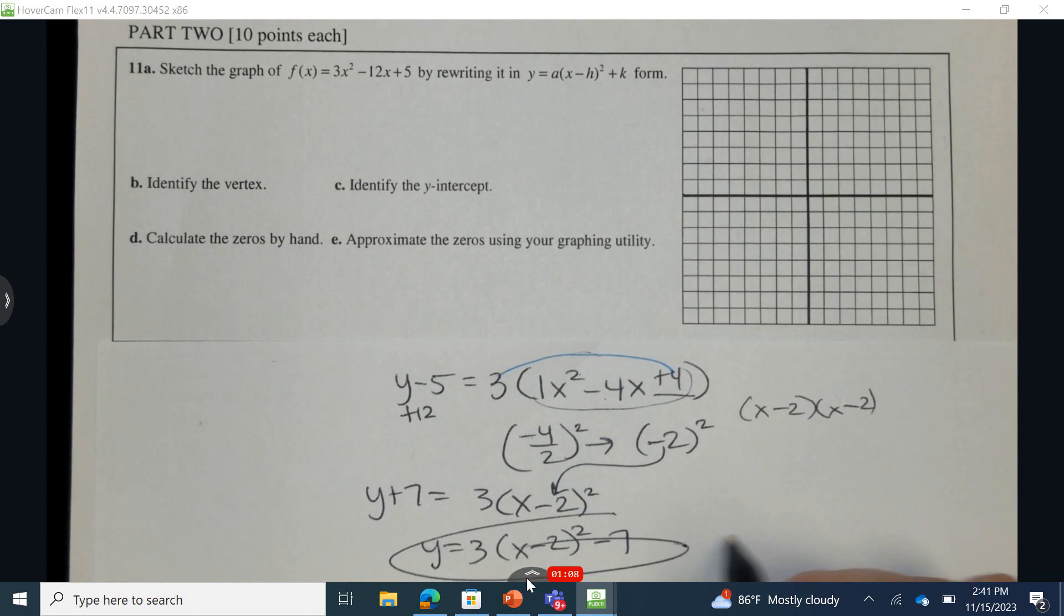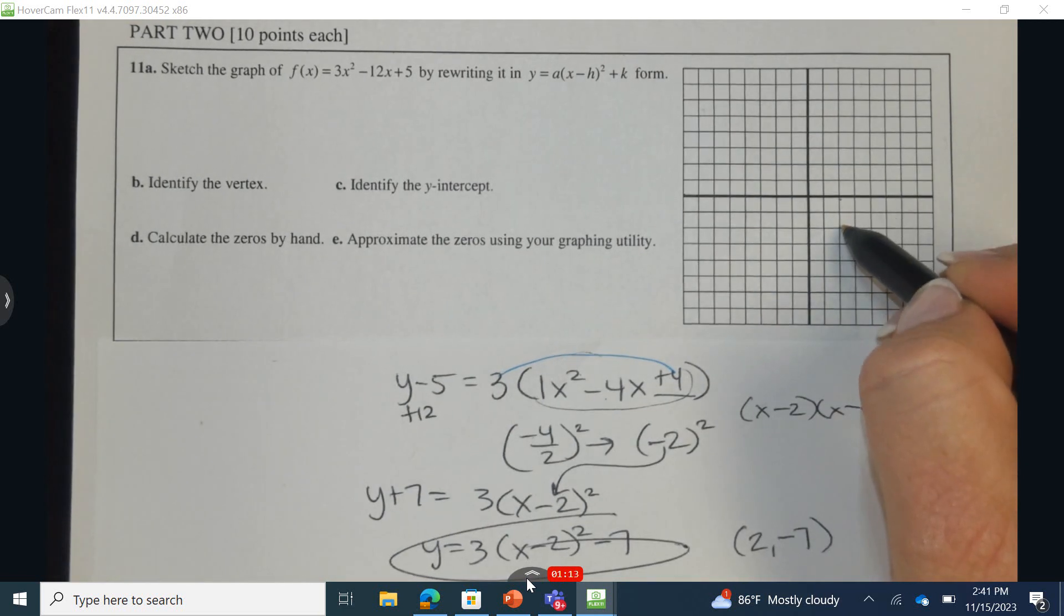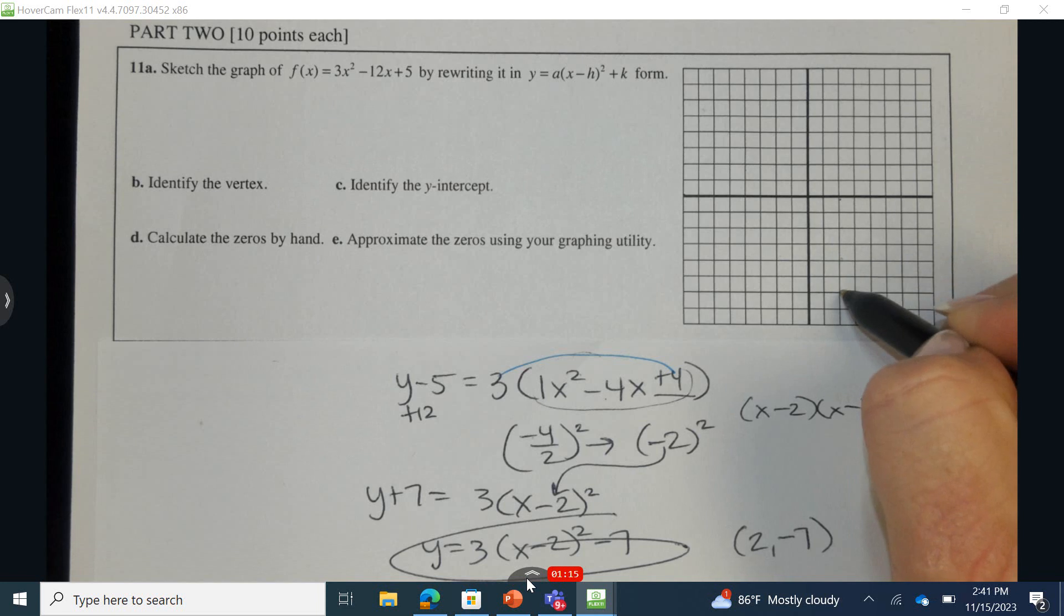Now let's identify the vertex. The vertex can be found at 2, negative 7. So 2, negative 7. 2, 4, 6, and 7.